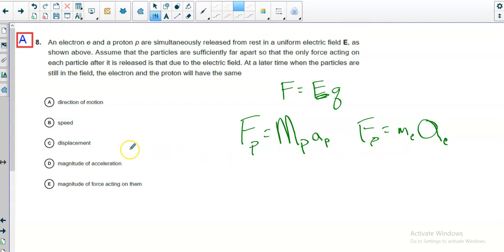So the only thing that they're going to have the same, they won't have the same speed. They won't have exactly opposite directions. Because they don't have the same speed, the electron is going to move a much bigger displacement. Magnitude of acceleration? Nope, they're different. So it's got to be magnitude of the force. They have the same force acting on them.